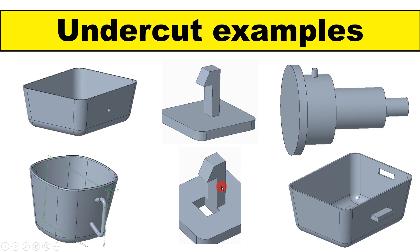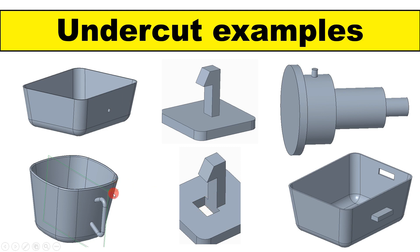These are examples of where we can shift the parting line and avoid undercuts. We can also add a recess — for the hinge example, I added a hole at the bottom and cut out that portion, so it will no longer be an undercut. In this way we can avoid undercuts by shifting the parting line.